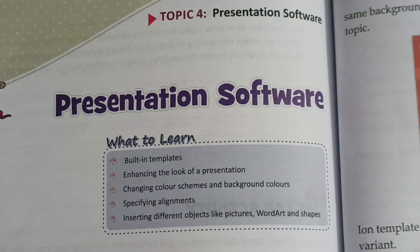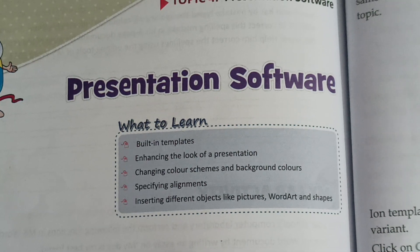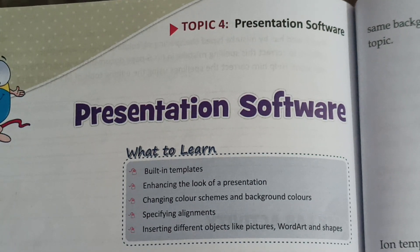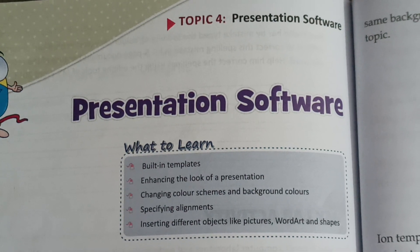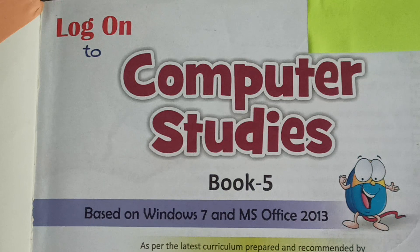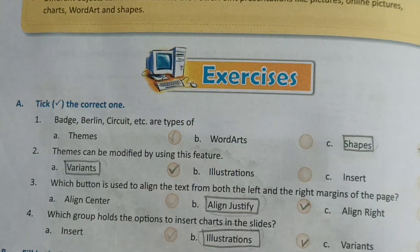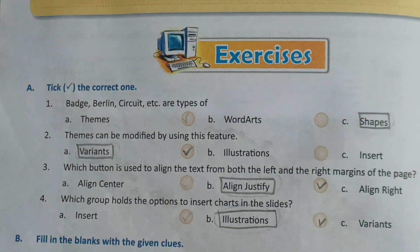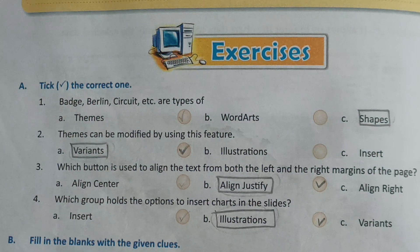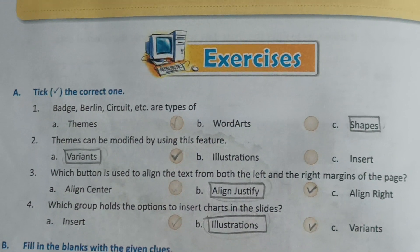Hello everyone, welcome to my channel — your teacher, your friend. In today's video I'll be helping you solve the back exercise of the chapter 'Presentation Software' from the book 'Log on to Computer Studies.' This is for Class 5. Let's get started. Part A: Choose the correct one. Number one: Badge, Berlin, Circuit, etc. are types of shapes.